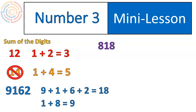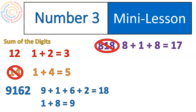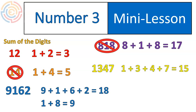Let's look at 818 and figure out if it has a factor of 3. 8 plus 1 plus 8 is 17. 17 doesn't divide evenly by 3, therefore 818 does not have a factor of 3. Let's look at one more: 1,347. If we add 1 plus 3 plus 4 plus 7, we get 15. We know 15 is divisible by 3, therefore 1,347 will divide evenly by 3 — it has a factor of 3.